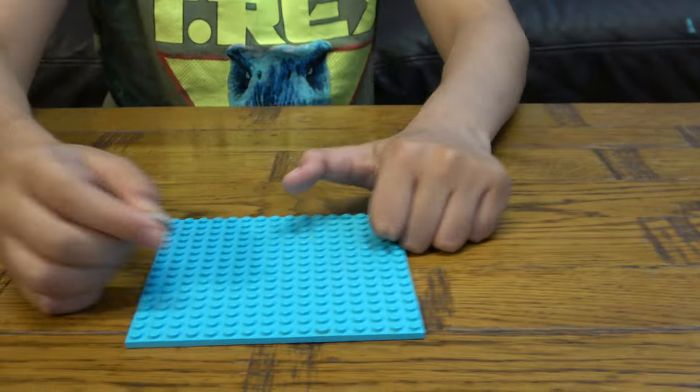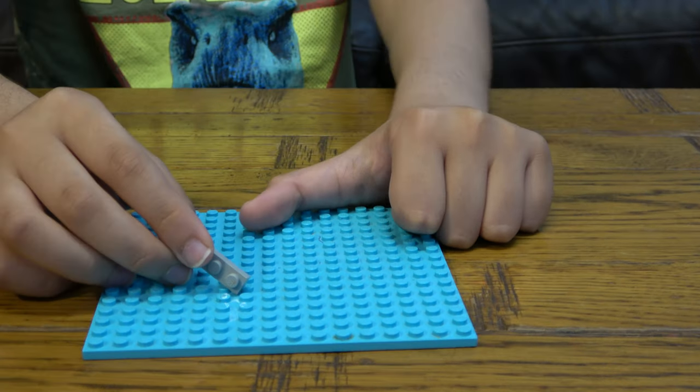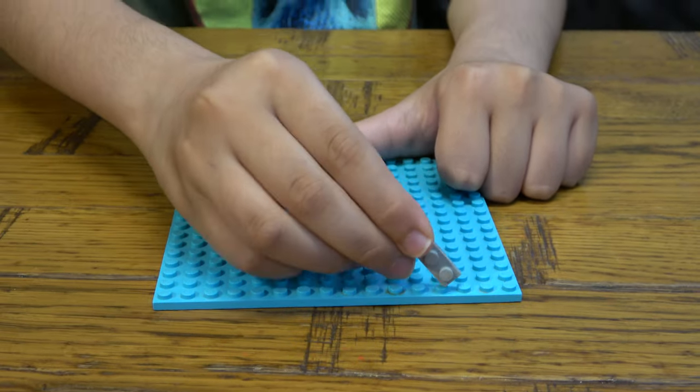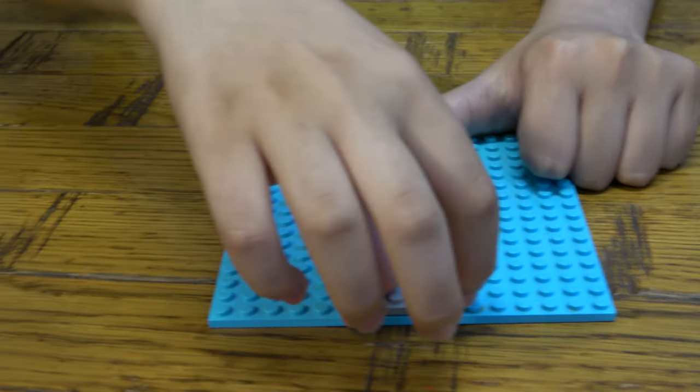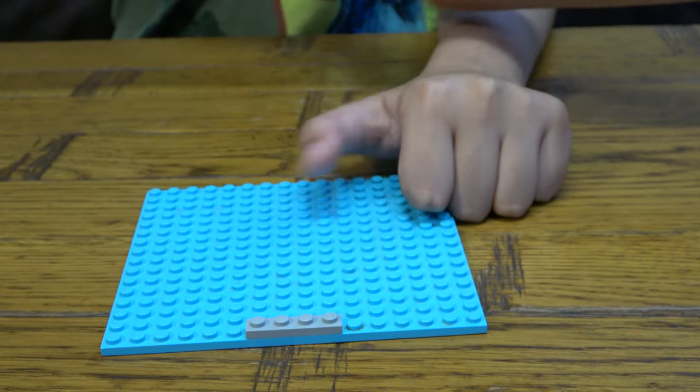So first things first, we're going to count. 1, 2, 3, 4, 5, 6. So 3, 3, 3, 3, so you have 6 on each side.